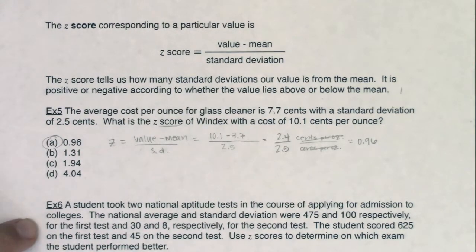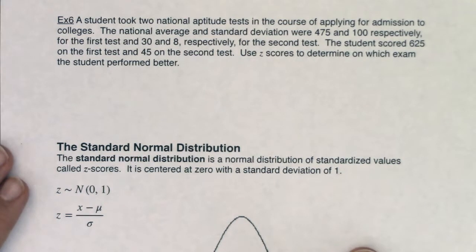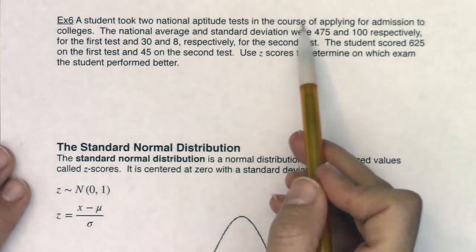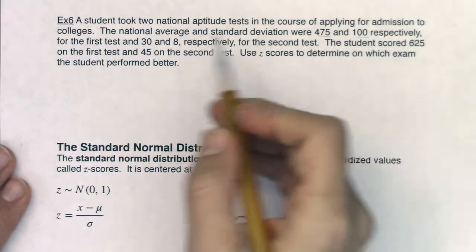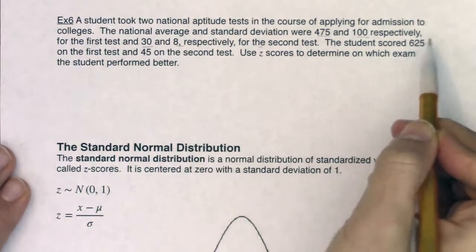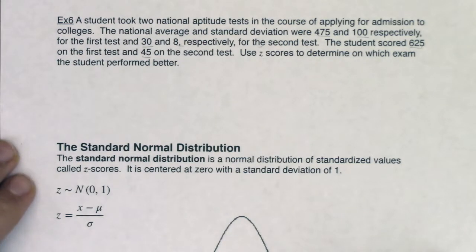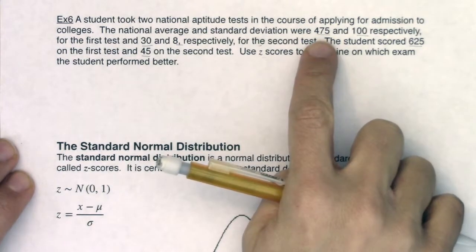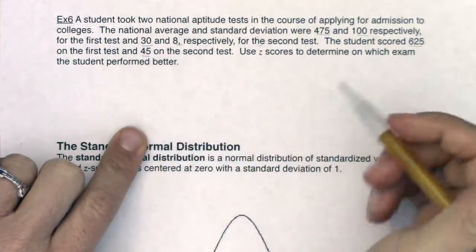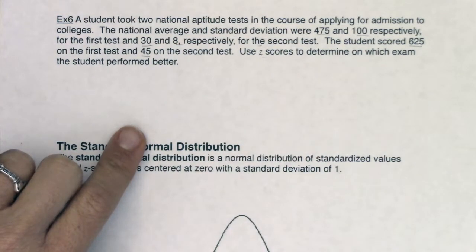Now let's use z-scores to compare data from two completely different sets of numbers and get them on a common scale. Once on a common scale, we can compare them. A student took two national aptitude tests while applying for college admission. The national average and standard deviation were 475 and 100 respectively for the first test, and 30 and 8 for the second test. The student scored 625 on the first test and 45 on the second test. Use z-scores to determine on which exam the student performed better. These tests are on completely different scales — is 625 a better score than 45, relatively speaking?